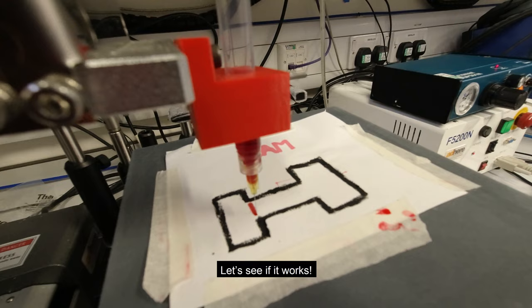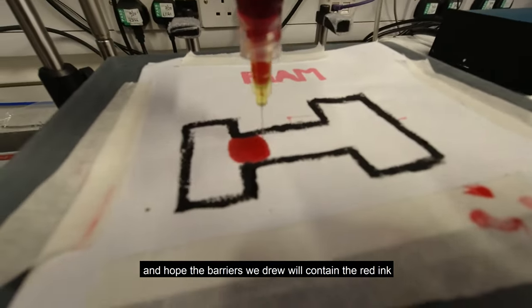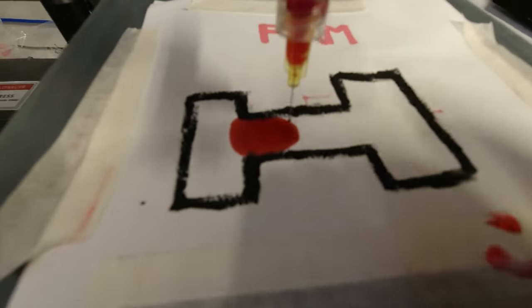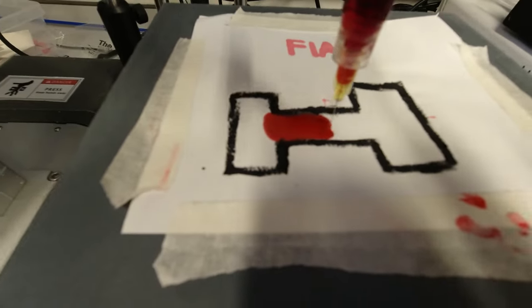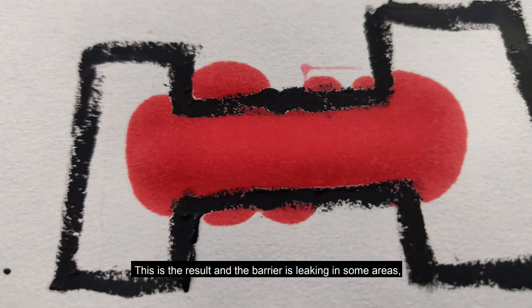Let's see if it works. We now print the center of the rectangle and hope the barriers we drew will contain the red ink. Oh no! This is the result, and the barrier is leaking in some areas, but it did work in others.